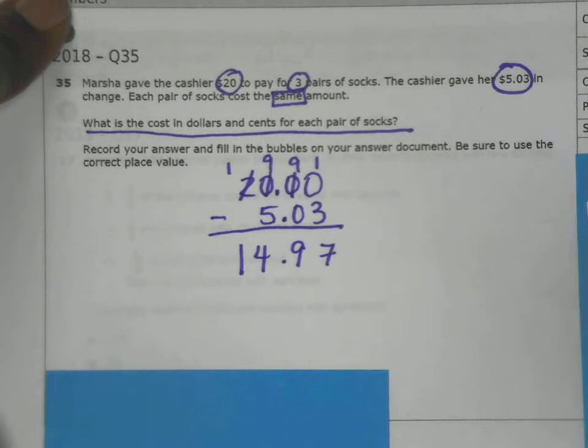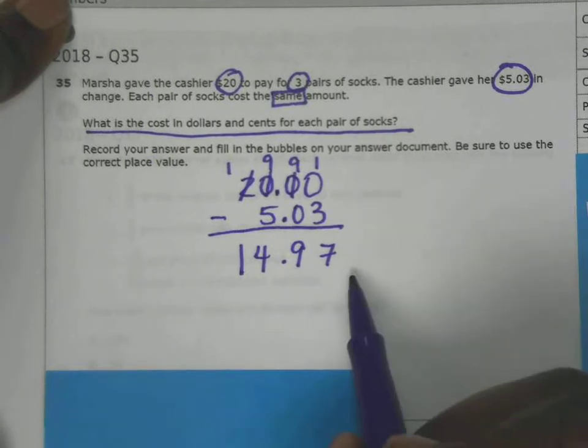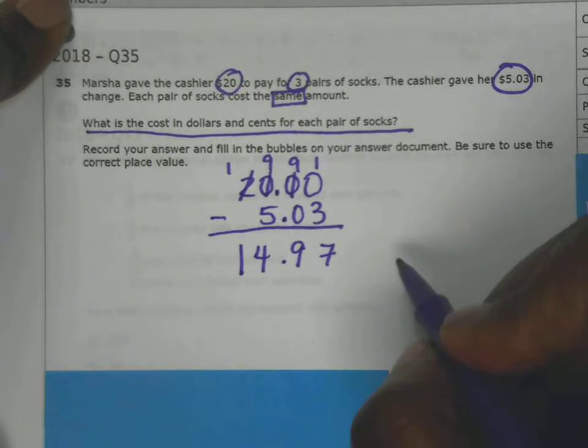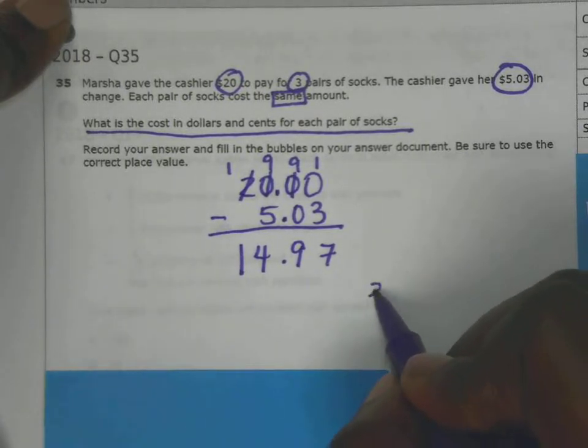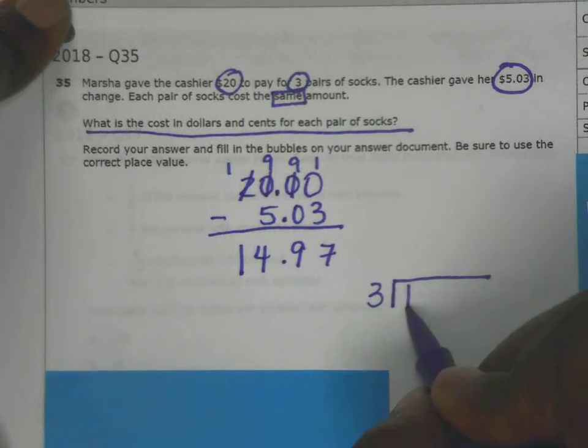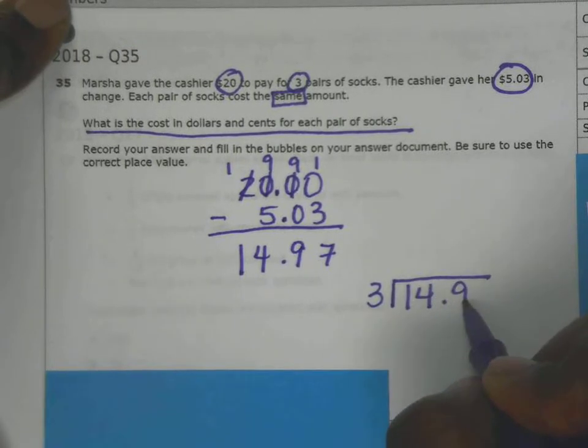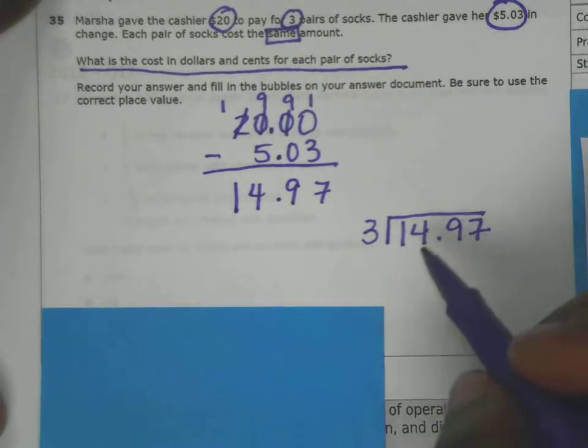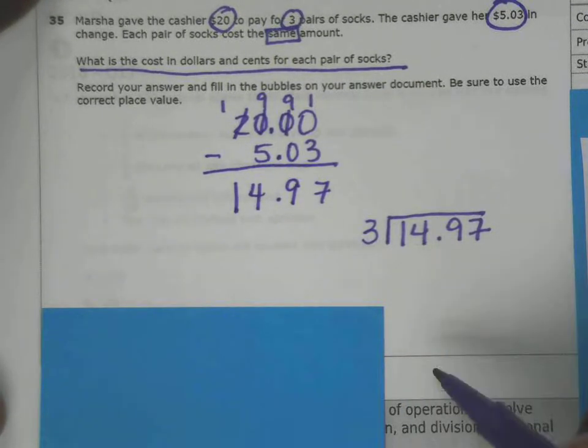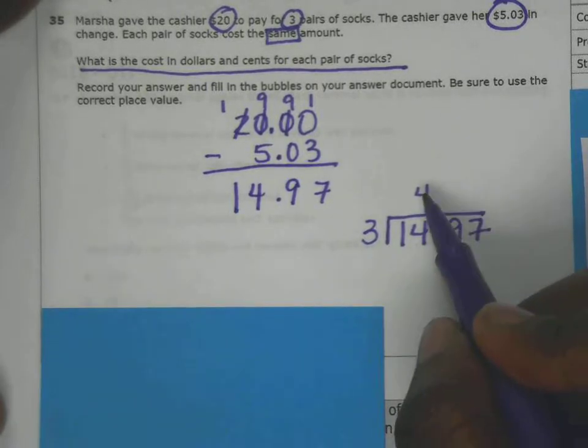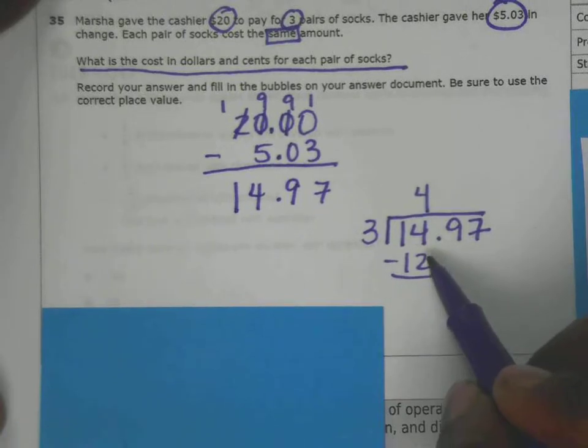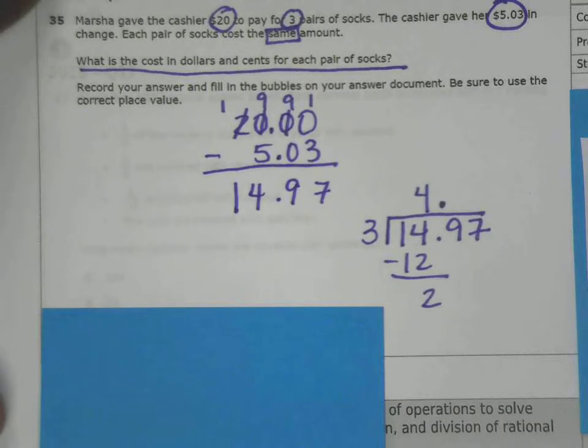She paid an equal amount for each pair of socks, so I need to divide $14.97 by the number of pairs she bought, which is three. So I'm dividing $14.97 by 3. Three goes into 14 four times. Four times three is 12. Subtract.